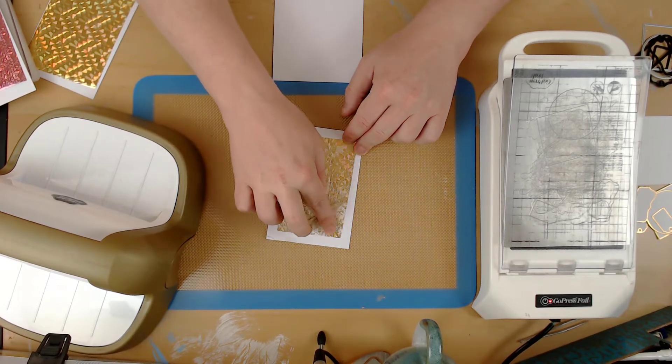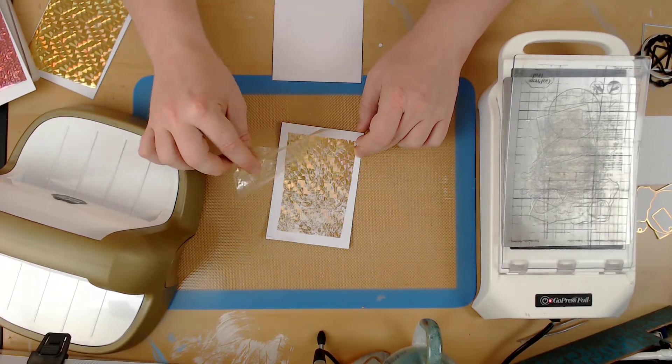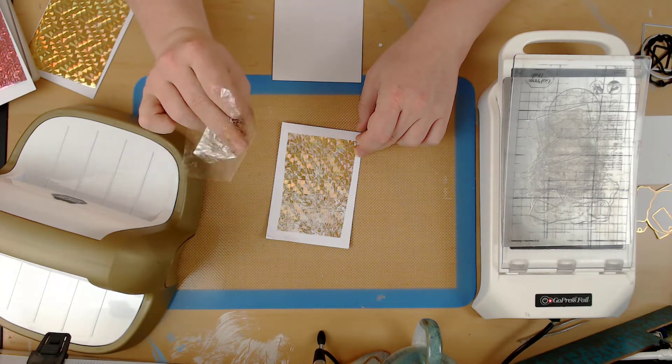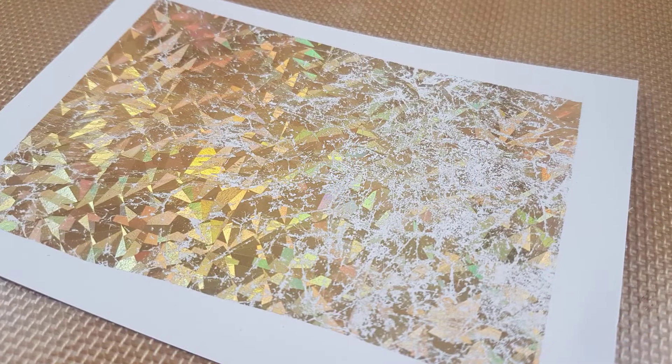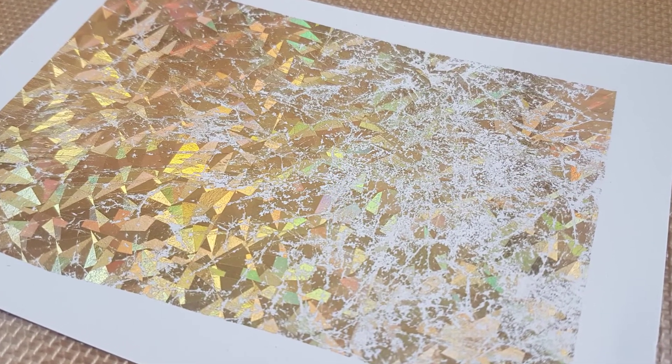And when ready, just rub your finger gently over one corner of the foil and you can peel back the carrier sheet, which pretty much has no foil left on it. This is the result that I got on that first pass.